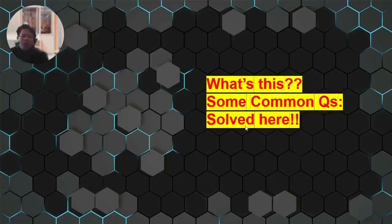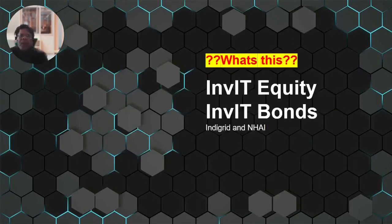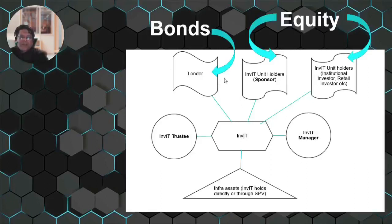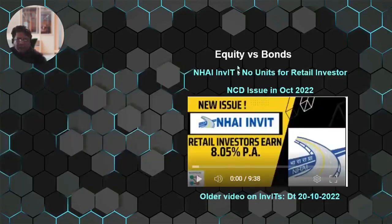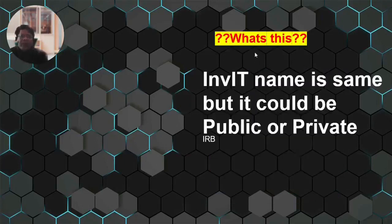Some common questions: what is InvIT equity and what is an InvIT bond? Both IndeGrid and NHAI InvITs have equity as well as bonds. In the InvIT structure, there are unit holders (sponsors and others, both institutional and retail) who hold equity, and there are also bond holders who are lenders. So an InvIT can raise finance through both. IndeGrid Trust, for example, has listed equity and listed bonds. The NHAI InvIT also came out with an NCD issue in October 2022.